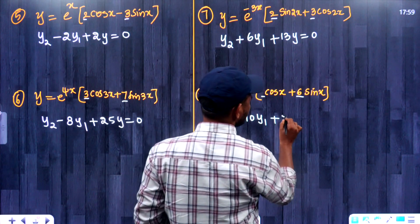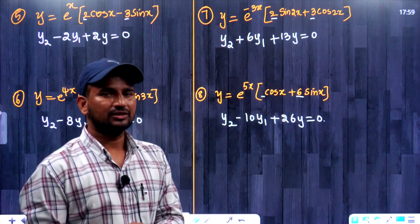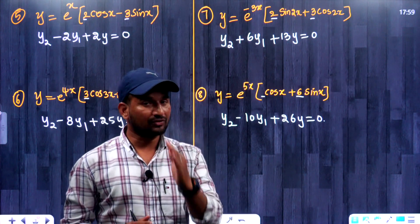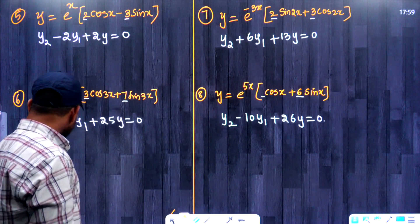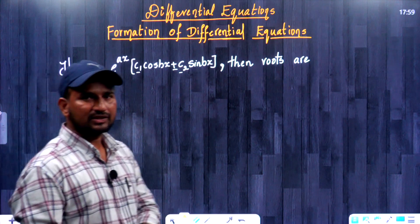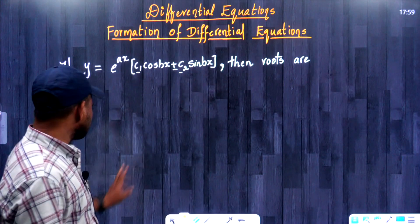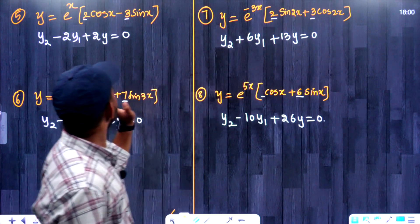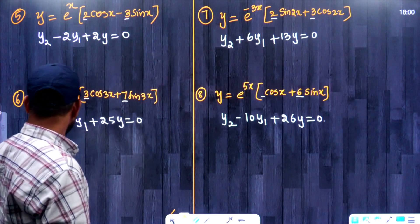This way, you can answer these questions in a single step. When the question is in the form of y equal to e power ax into c1 cos bx plus or minus c2 sin bx, we can answer directly.